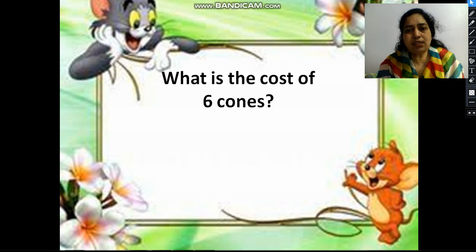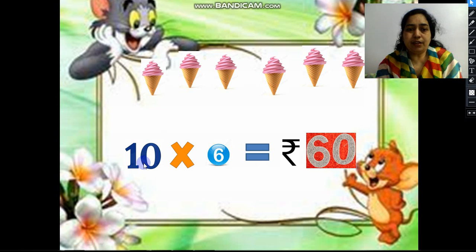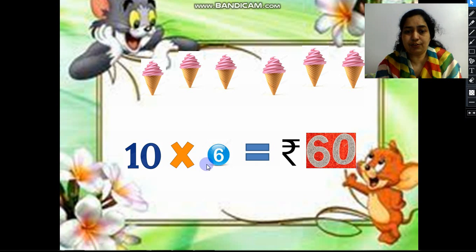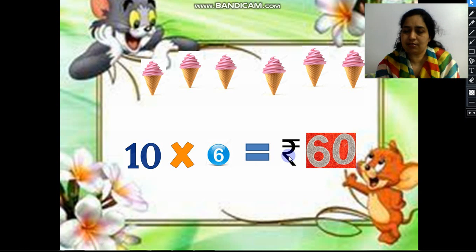What is the cost of 6 cones? We have the cost of 1 cone, and we have to multiply with the number of cones. We have 6 cones, so 10 sixes are 60. So rupees 60 is the cost.